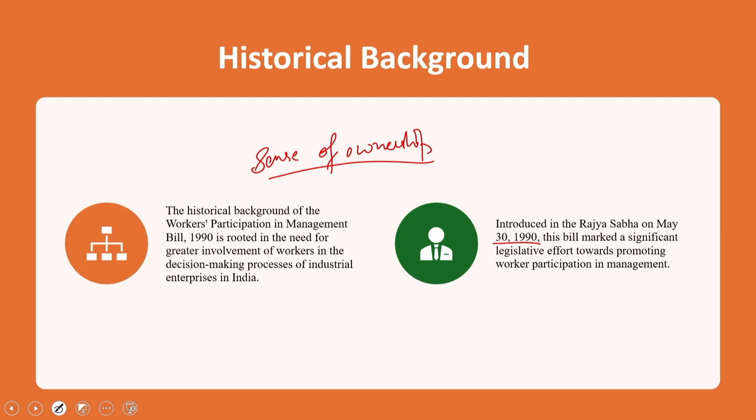Despite its noble intentions, the Workers Participation in Management Bill 1990 was not passed into law. However, the discussions and proposals within the bill reflected a growing recognition of the importance of incorporating workers' perspectives and interests in the management of industrial organizations, specifically aiming to enhance productivity, industrial relations, and overall workplace harmony in India.